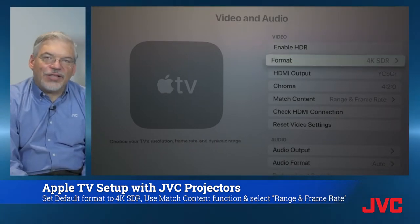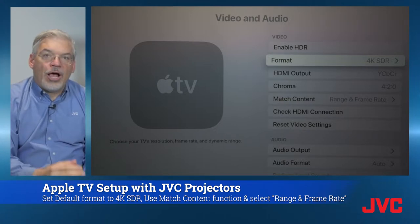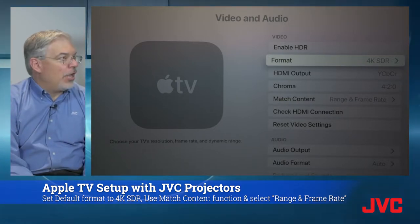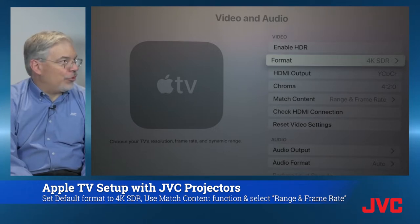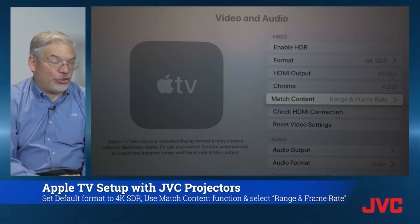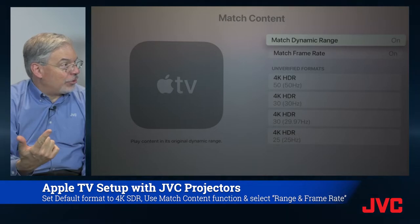Next, we're going to go down to the match function. In the match function, we are going to turn on Match Frame Rate and Match Dynamic Range. Match Dynamic Range is really the key — anything that's HDR is going to play as HDR, but anything that's SDR is going to stay as SDR.